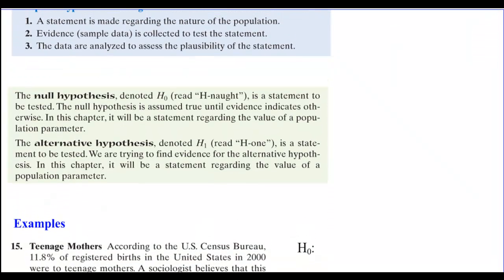These statements — we're actually going to make two of them. We're going to have the null hypothesis, H sub zero, read H-naught. H-naught is a statement to be tested. The null hypothesis is assumed true until evidence indicates otherwise. In this chapter, it will be a statement regarding the value of a population parameter: P, mu, or sigma.